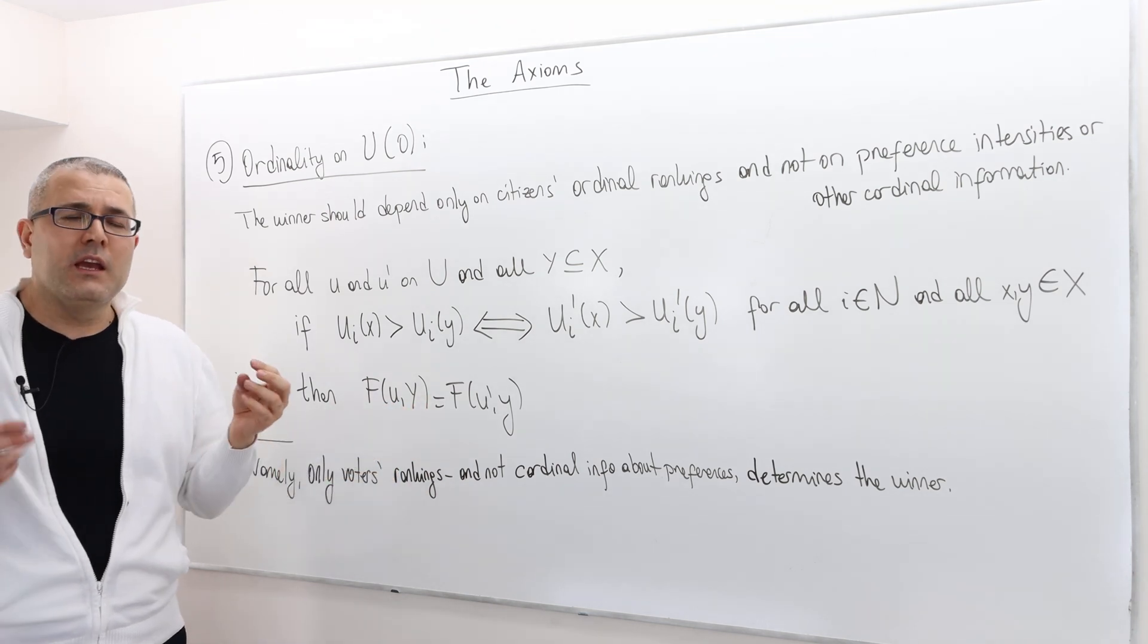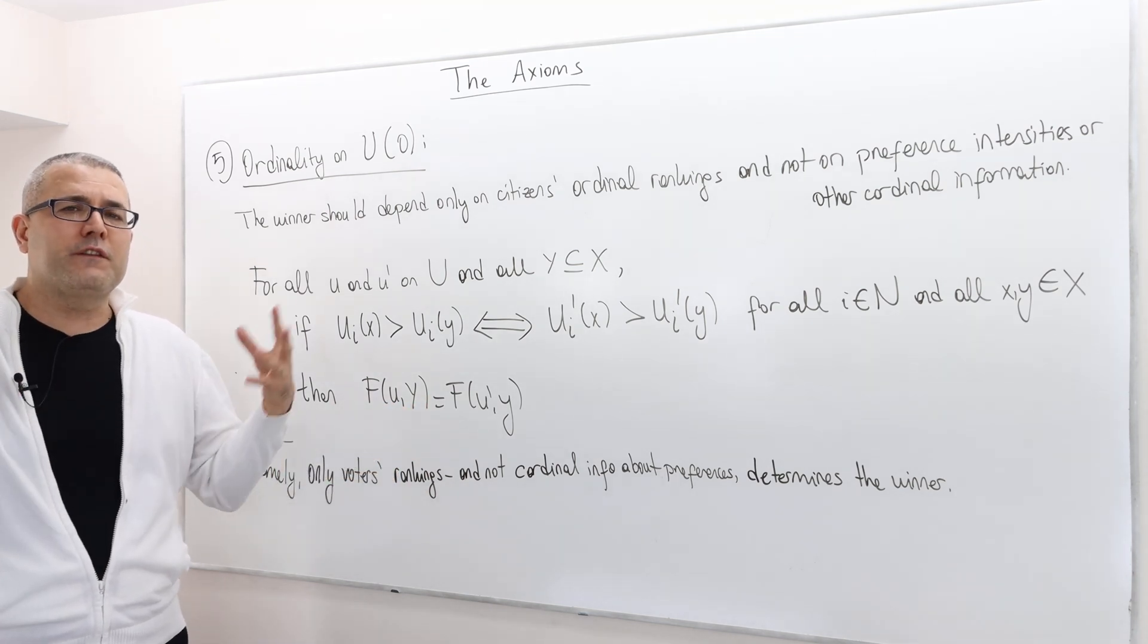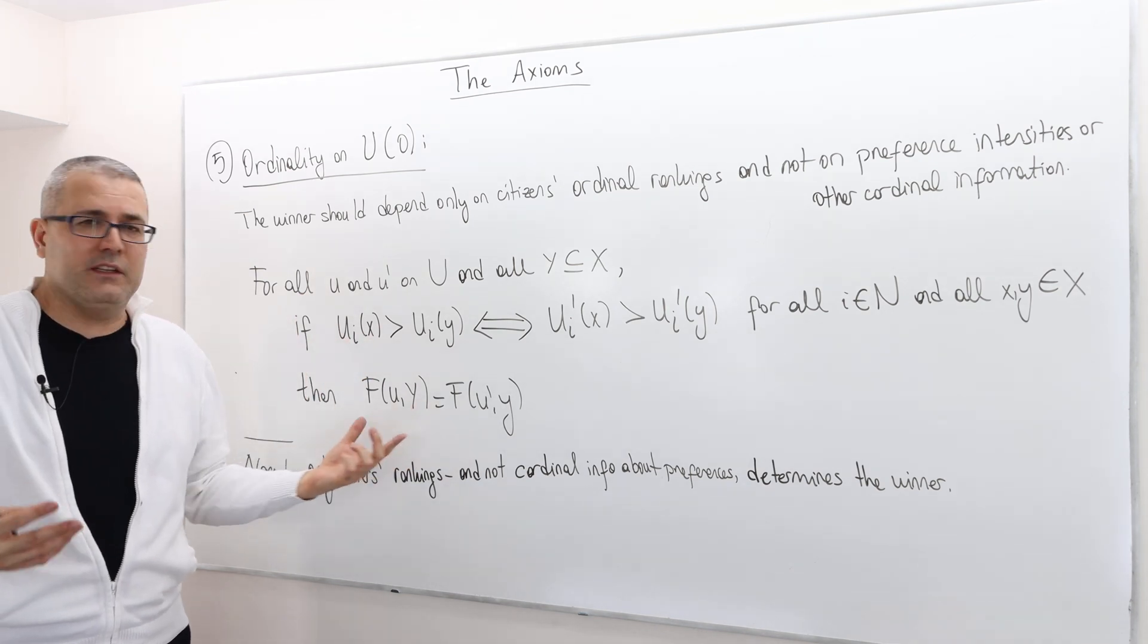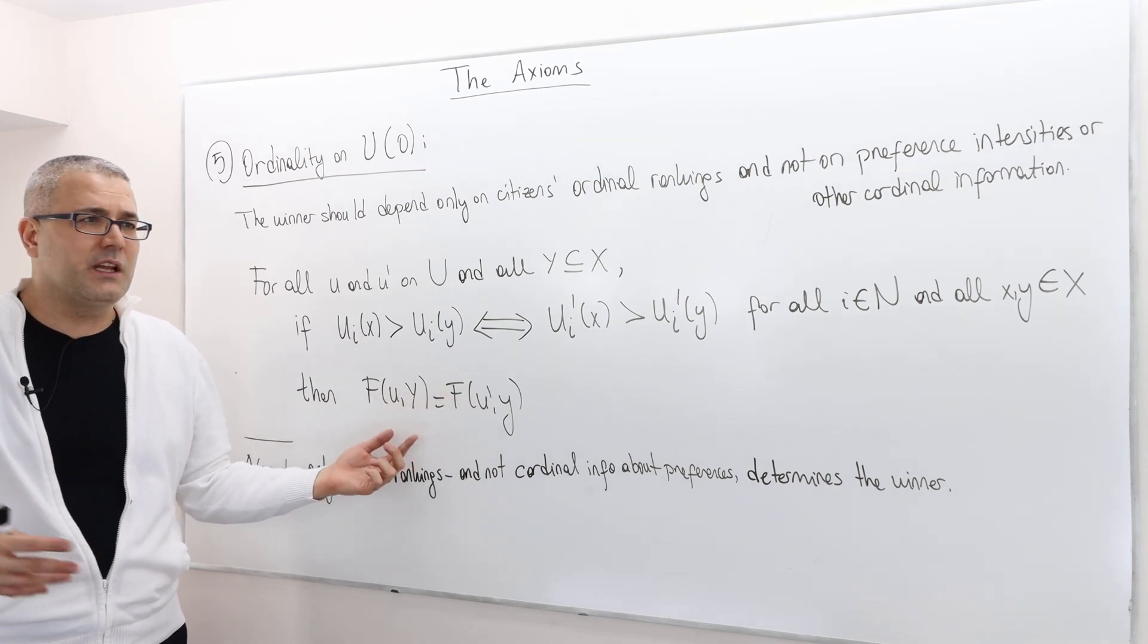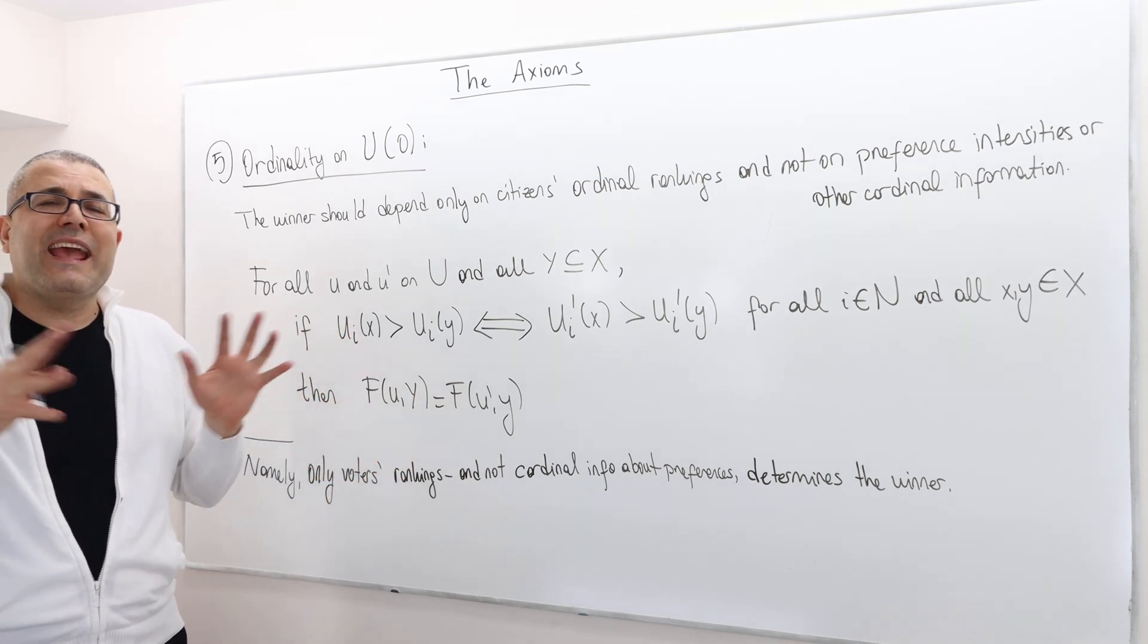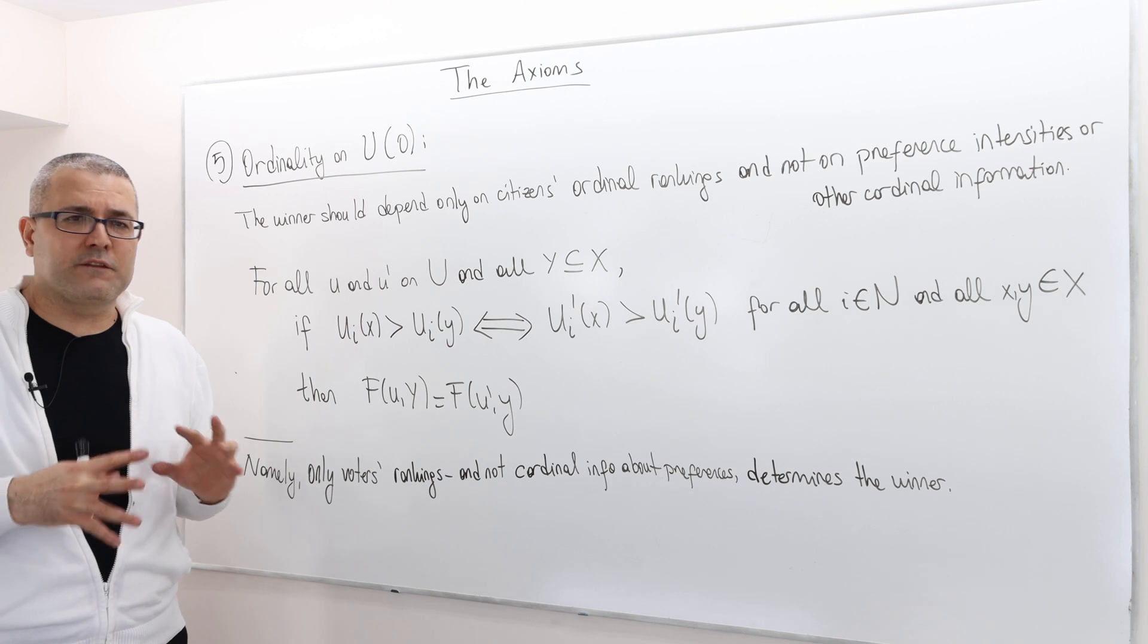So U and U prime, these are two preference profiles. If they are the same, obviously, the voting rule should select the same thing, but they're different, potentially. However, they have the same ordinal information.